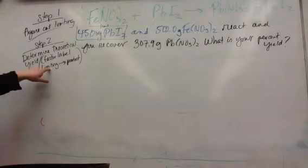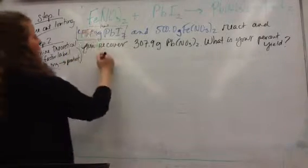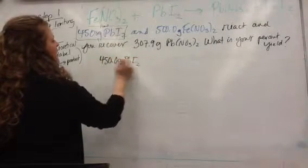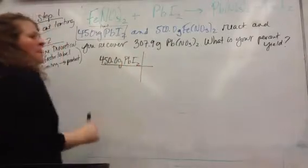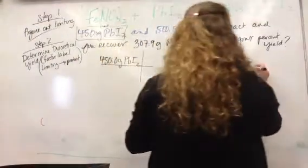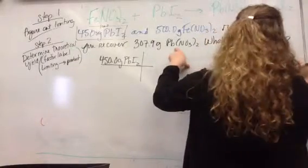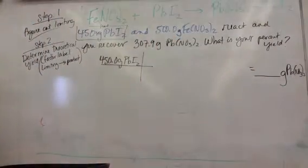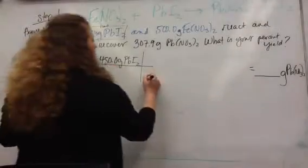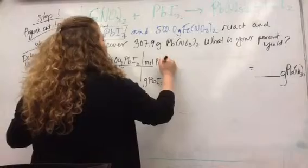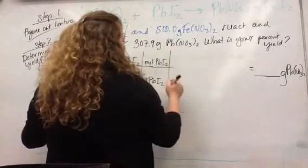So you're going to start with your limiting: 450.0 grams lead-2 iodide. Our goal at the end is to have grams of lead-2 nitrate. You know how to do this. This is not hard. You can do this. So grams PbI2, moles PbI2...